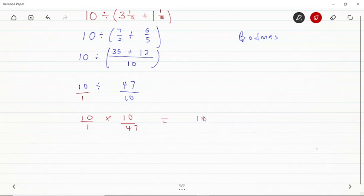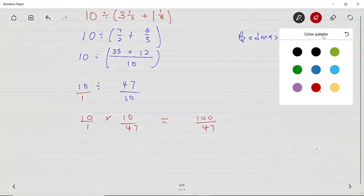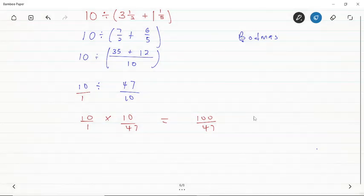So 10 times 10 gives us 100, then 1 times 47 also gives us 47. Now we have 100 over 47, and we can convert it back into a mixed fraction because part of the question was written in mixed fraction,